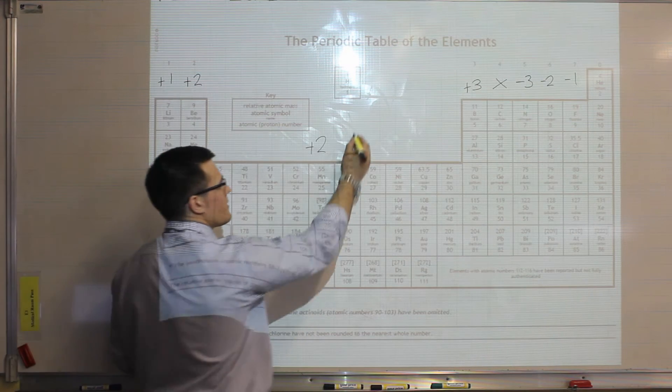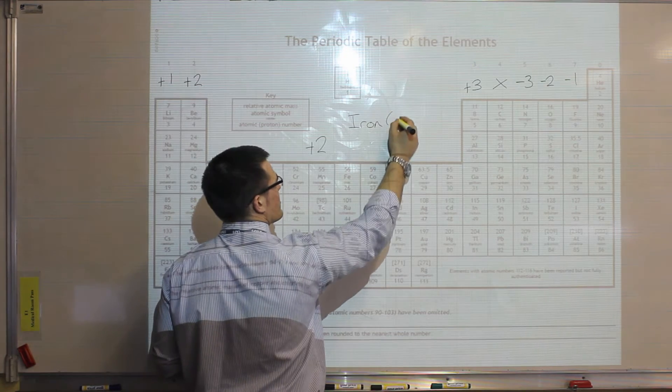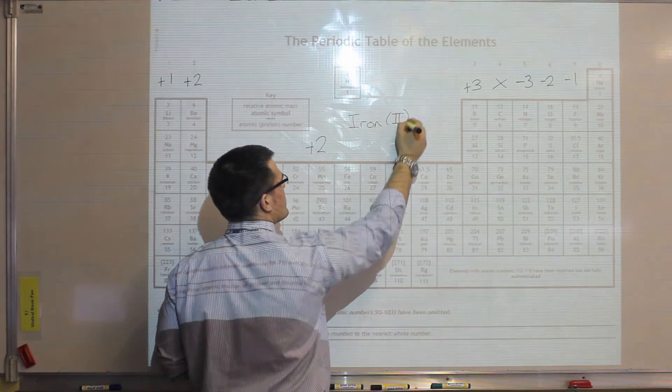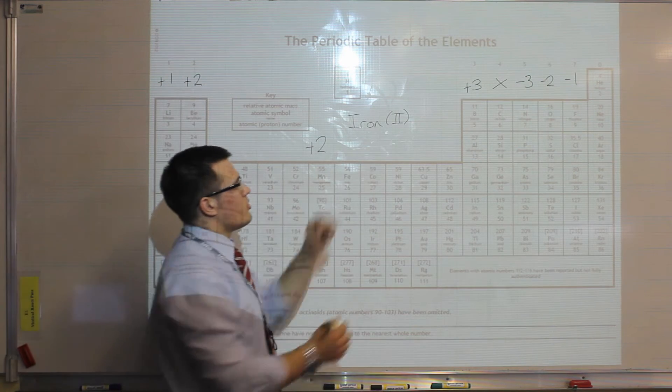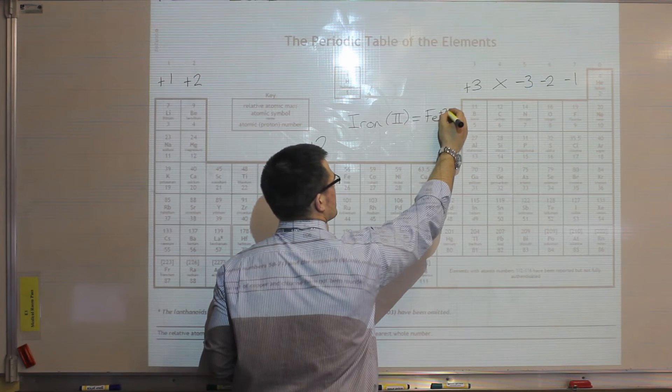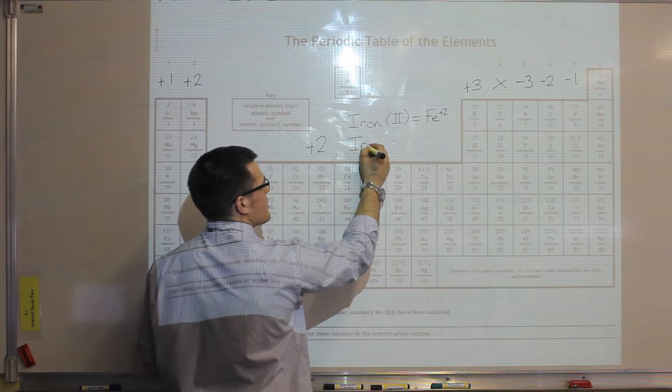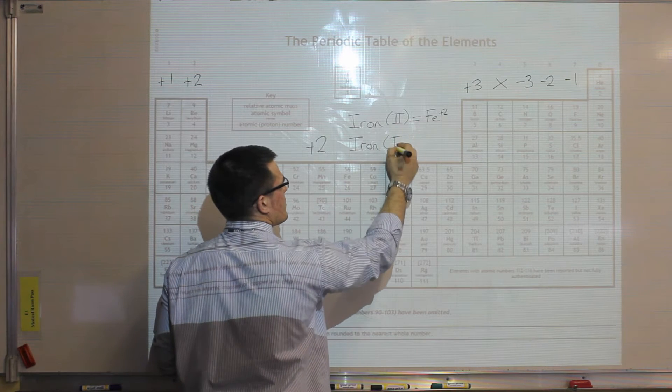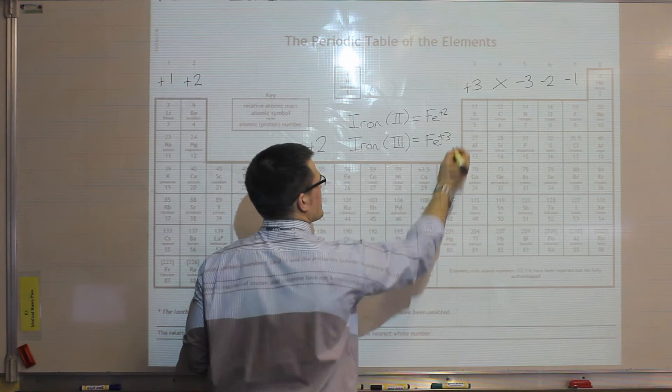Number 1, if they give you an example where they state, say for example iron, and they put Roman numerals after it, then that will dictate the charge. So this is the Roman numeral for 2, so that would be Fe2+, so iron 2+. We could have also had iron 3+, so that would tell us that we've got iron 3+.